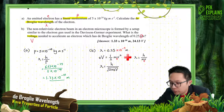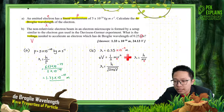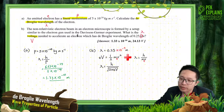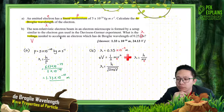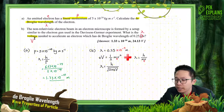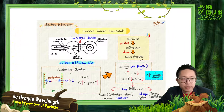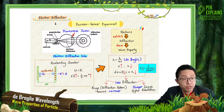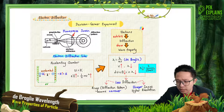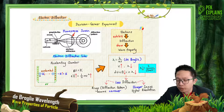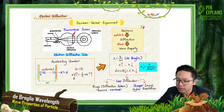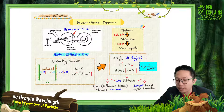Voltage means the big V. The question already gives you lambda. To accelerate the electron we use a voltage — a potential difference — with two parallel plates, positive and negative. The electron is accelerated because of the potential difference, as in the accelerating chamber of the Davisson–Germer experiment. In the accelerating chamber we use conservation of energy: potential energy converts to kinetic energy. So the formula is eV = ½mv².